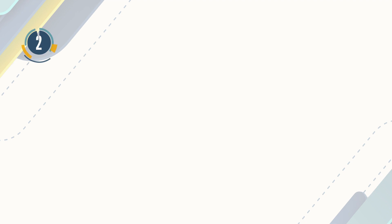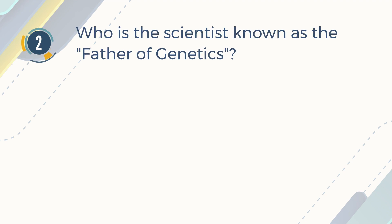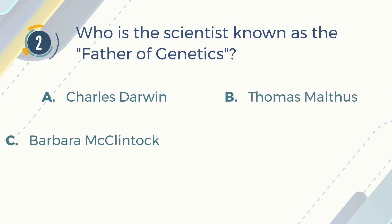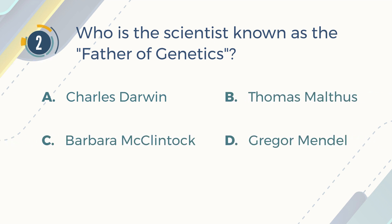Number 2. Who is the scientist known as the father of genetics? A. Charles Darwin. B. Thomas Malthus. C. Barbara McClintock. D. Gregor Mendel.